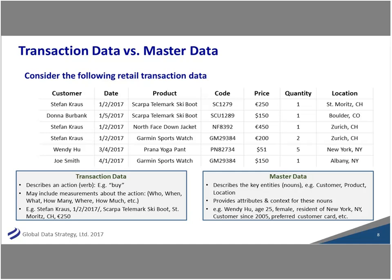The master data is going to describe the key entities around those transactions — the information about Stefan. Consider Wendy, who bought a Prana yoga pant in New York. That's interesting at that point in time, but what's more interesting is that she's 25 years old, she's female, she lives in New York, she's been a customer since 2005, she's a preferred customer. All that information around your customer is your master data.